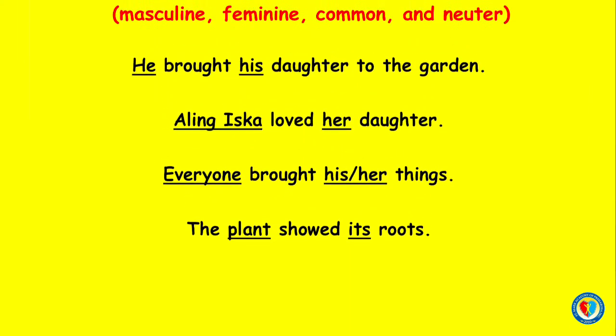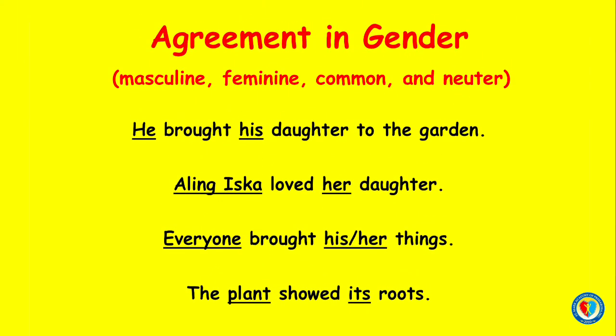Agreement in gender — masculine, feminine, common, and neuter. Example of masculine: 'He brought his daughter to the garden.' The pronoun is his, and the antecedent is he, which is masculine.